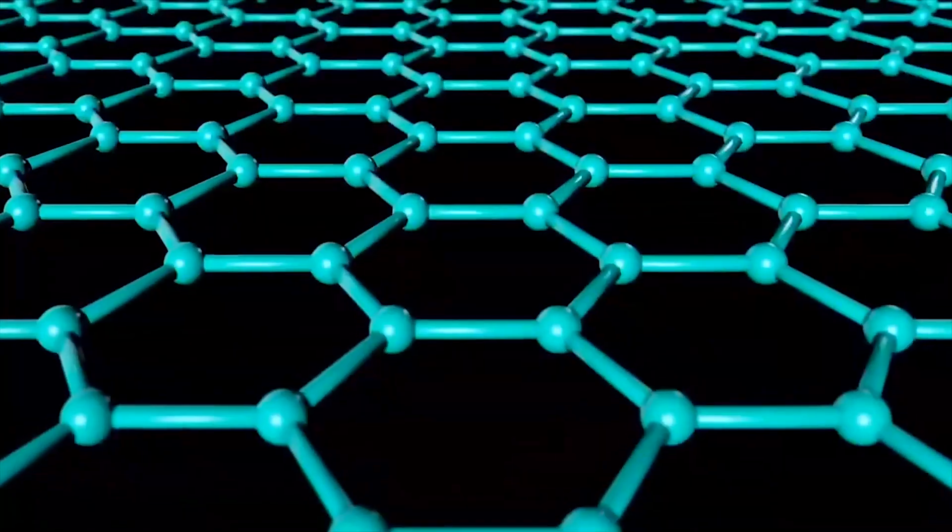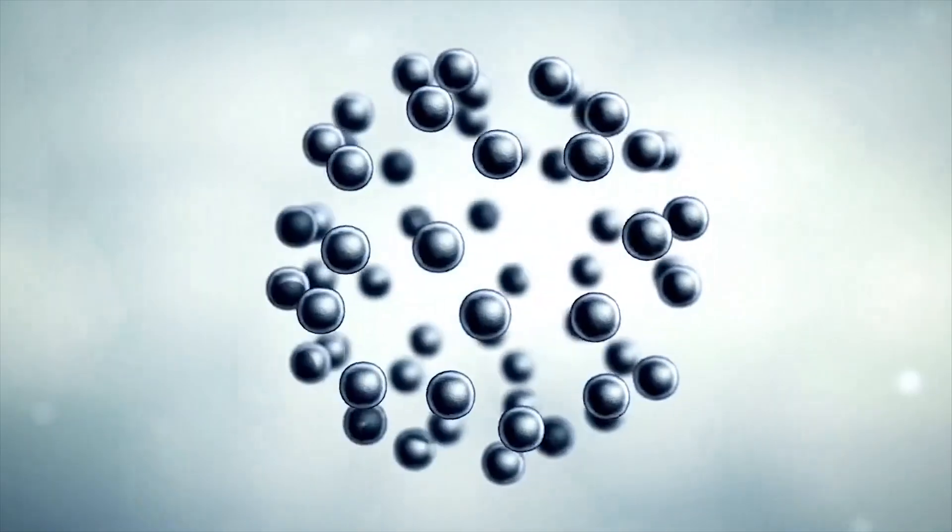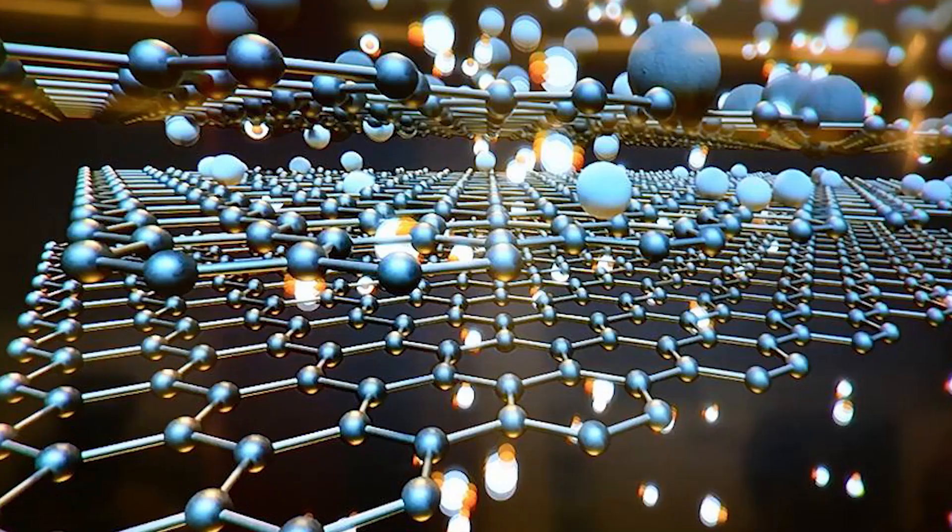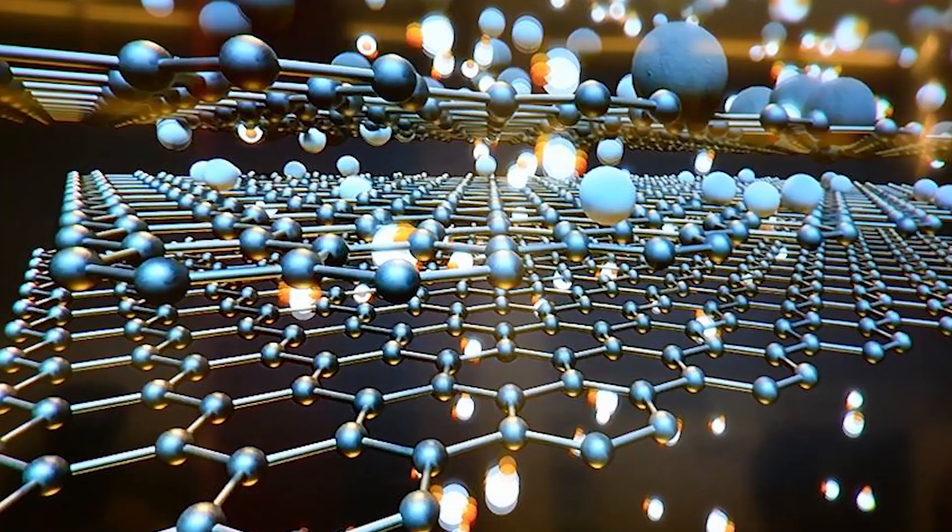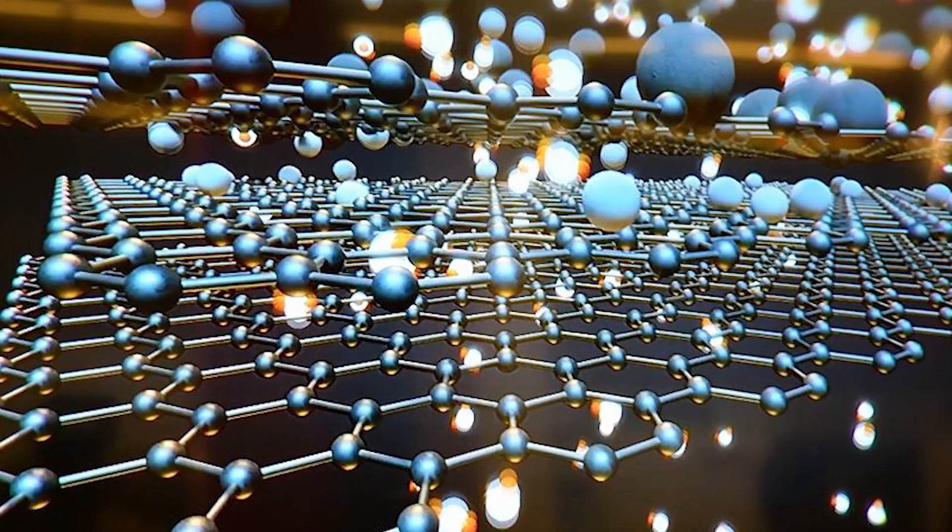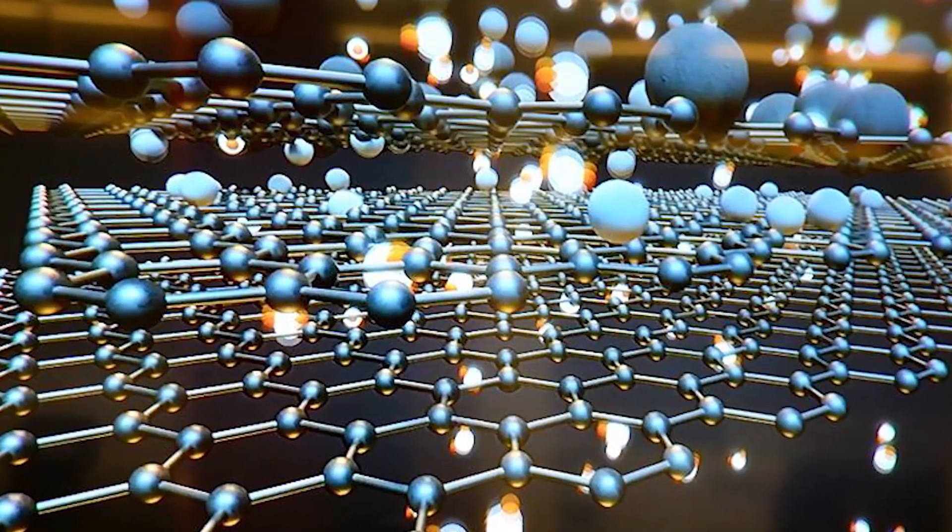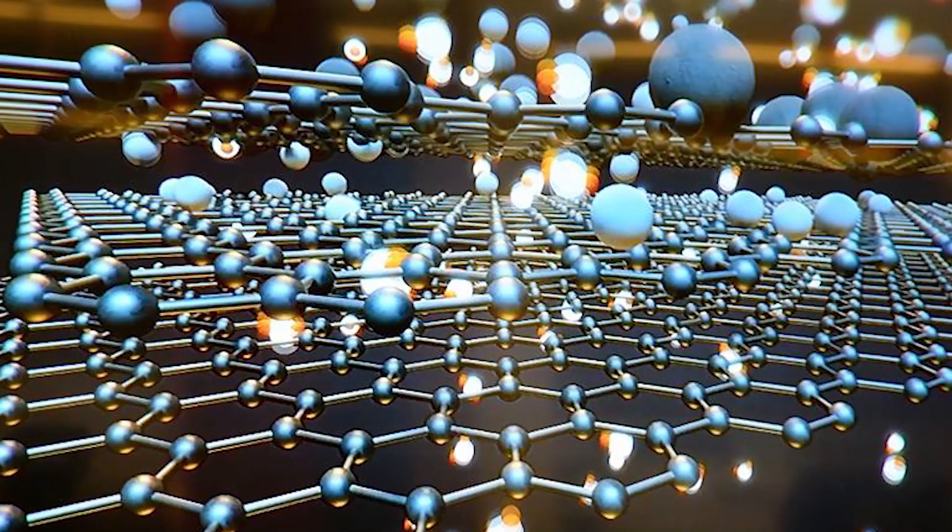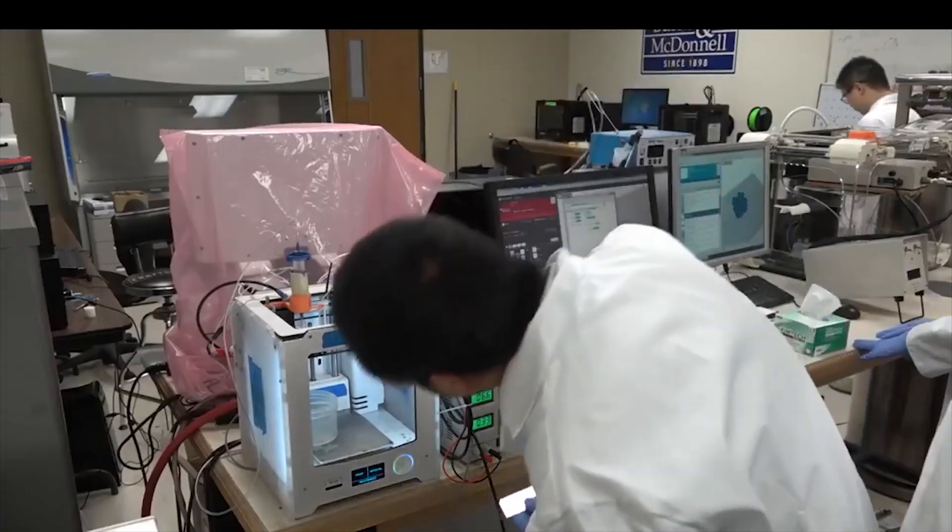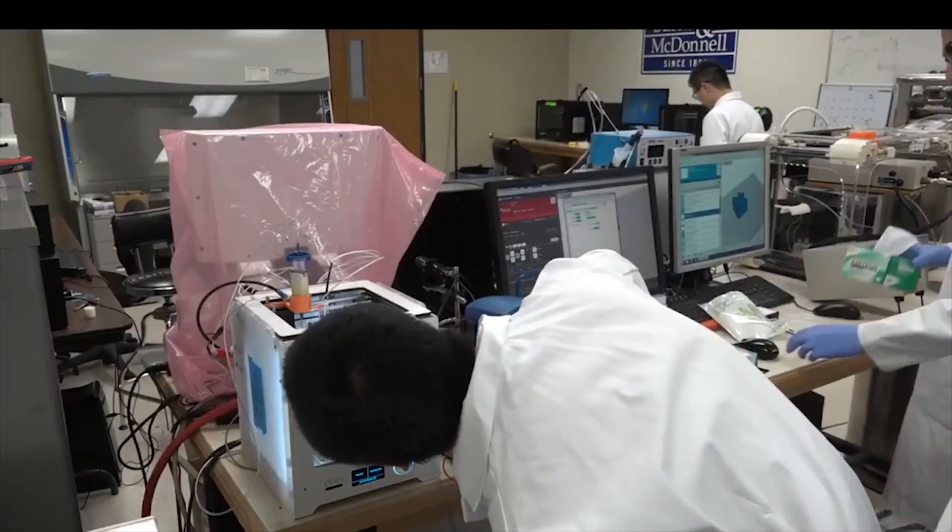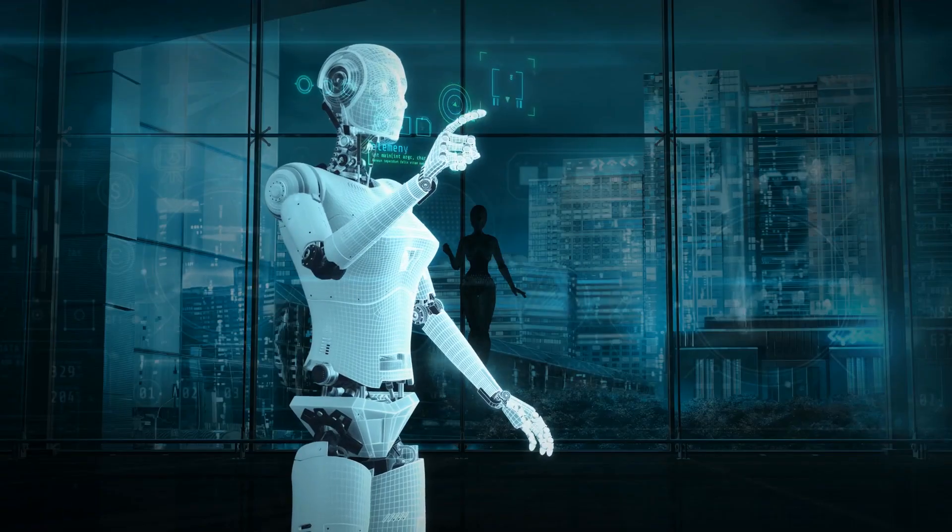Basically they said, 'Hey AI, here's the physics, now go invent the strongest shape possible.' And it did. It came back with designs no human had ever thought to try—intricate web-like structures that looked alien but performed like nothing else. Then using ultra precise 3D printers, they brought those designs to life.